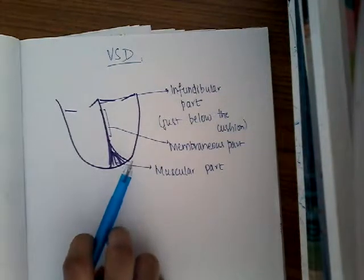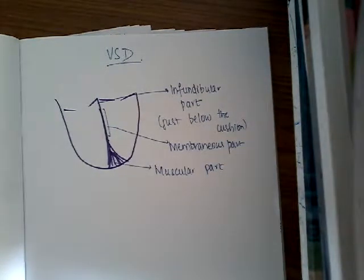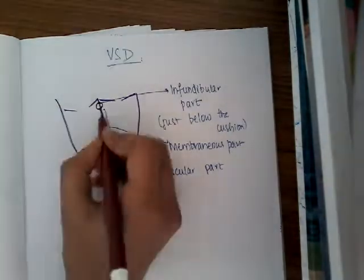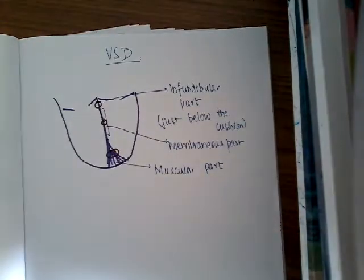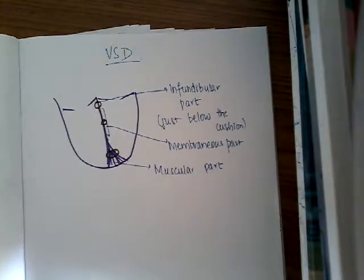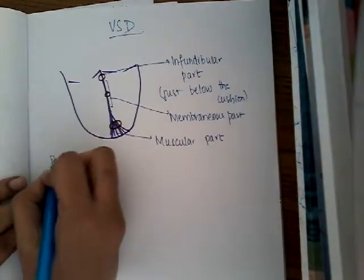If the defect is in the infundibular region, it is the infundibular type. If it is in the membranous region, it is the membranous type. If it is in the muscular region, it is the muscular type. Any of these VSDs share the same pathophysiology.